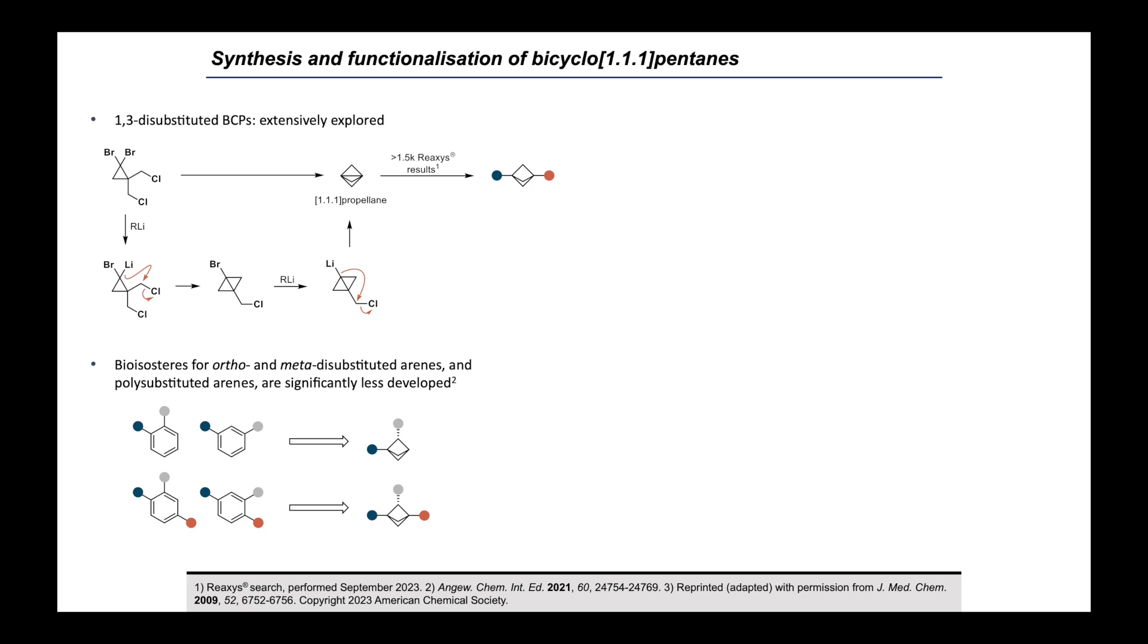But also, you'll notice that if we have two different bridgehead substituents on the BCP, then we also get a new stereogenic center on the bridge position, and the stereochemical complexity of a molecule, as well as its three-dimensionality, is also something that correlates positively with clinical success.